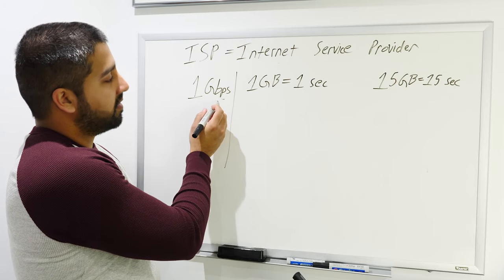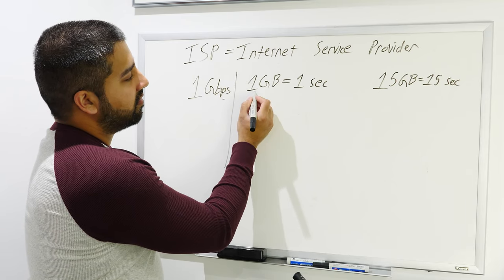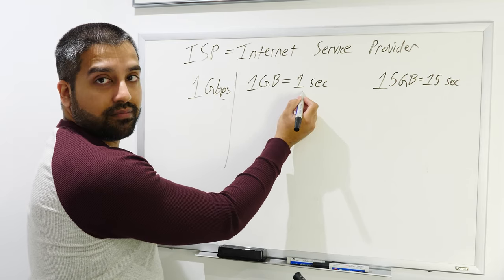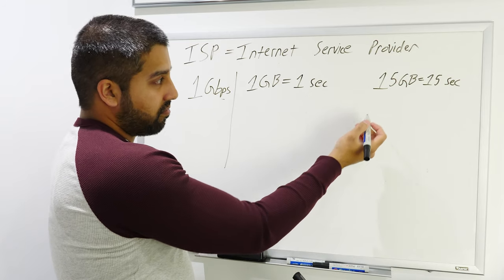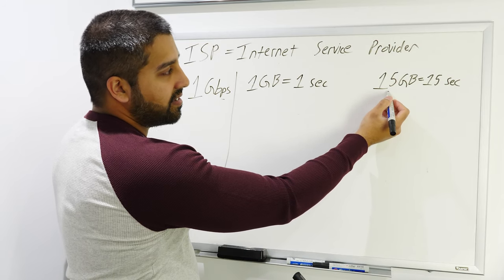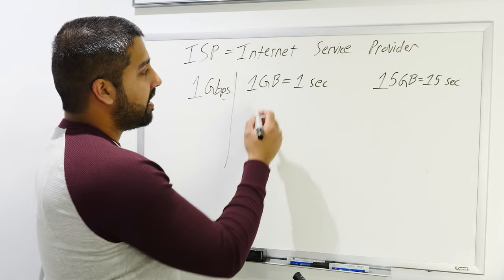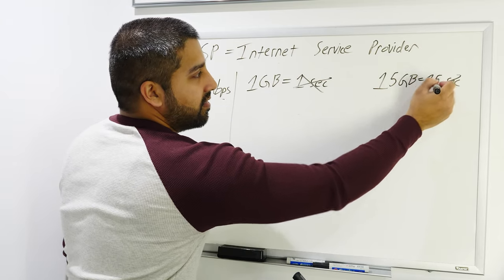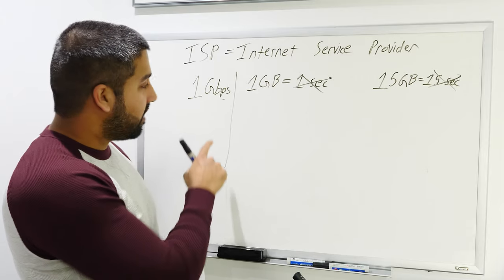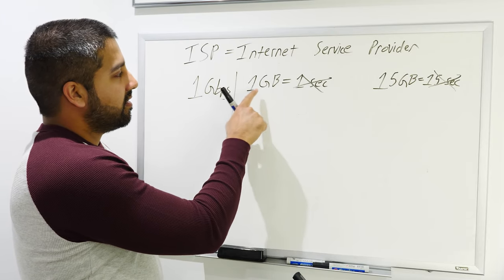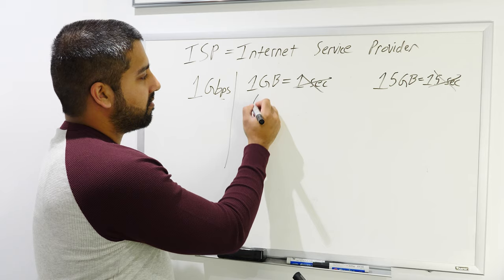A lot of people think that, hey, if I have one gigabit per second download speed, that means I can download a one gigabyte file in one second, right? And okay, of course that means if I have a 15 gigabyte file, I can download it in 15 seconds.